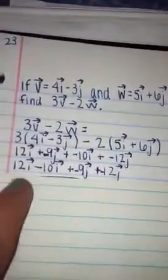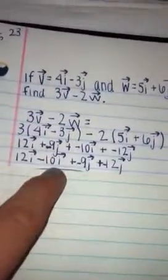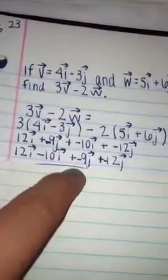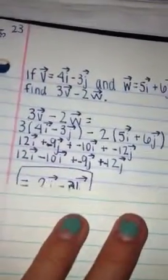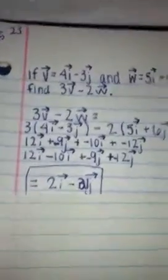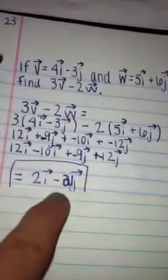We'll put them next to each other so that'll make that easier. 12 vector i minus 10 vector i plus negative 9 vector j plus negative 12 vector j. The solution comes out to be 2 vector i minus 21 vector j when you combine like terms. 12 minus 10 is 2, and negative 9 plus negative 12 is negative 21.